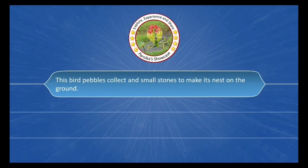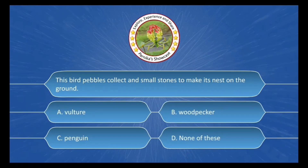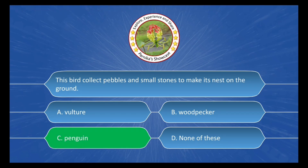Next question: This bird collects pebbles and small stones to make its nest on the ground. The options are: A. Vulture, B. Woodpecker, C. Penguin, D. None of these. The correct answer is Option C: Penguin.